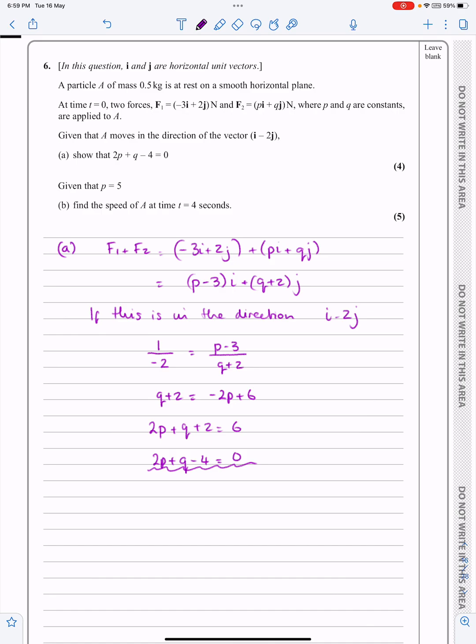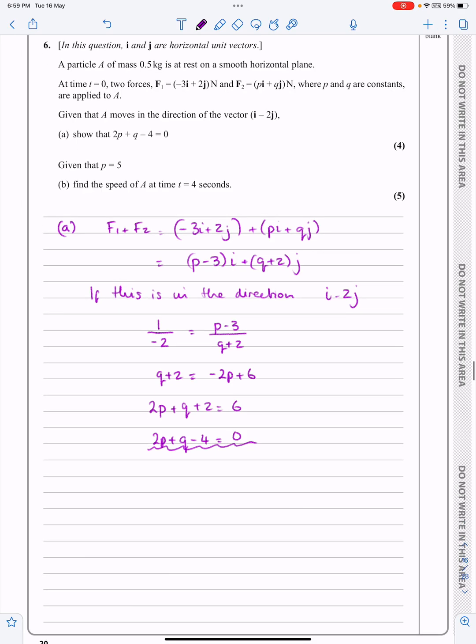So we've proved that first bit. It's really nice, isn't it, when we get a question where we're proving something, so we know we're on the right track with that bit. Part B, what does that say?